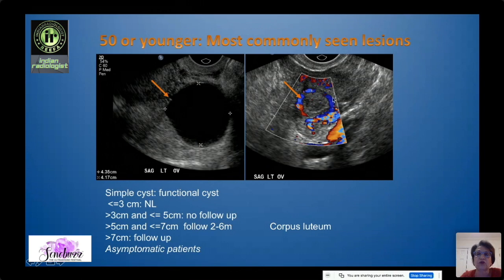This is an example of a corpus luteum, which shows fluid with vascularity around it. Because of this vascularity, they can sometimes bleed and become hemorrhagic cysts.